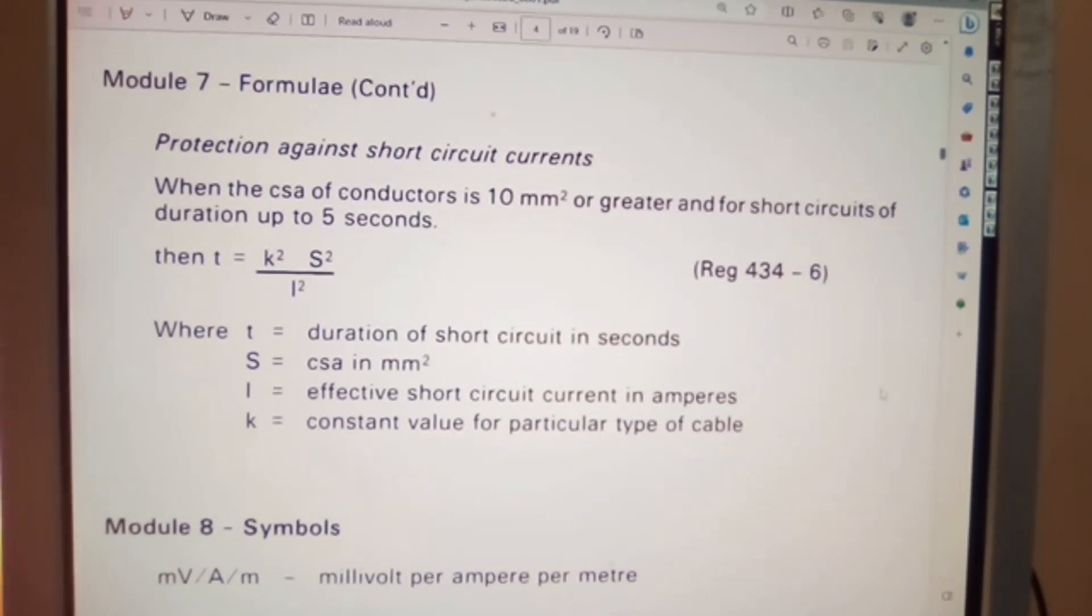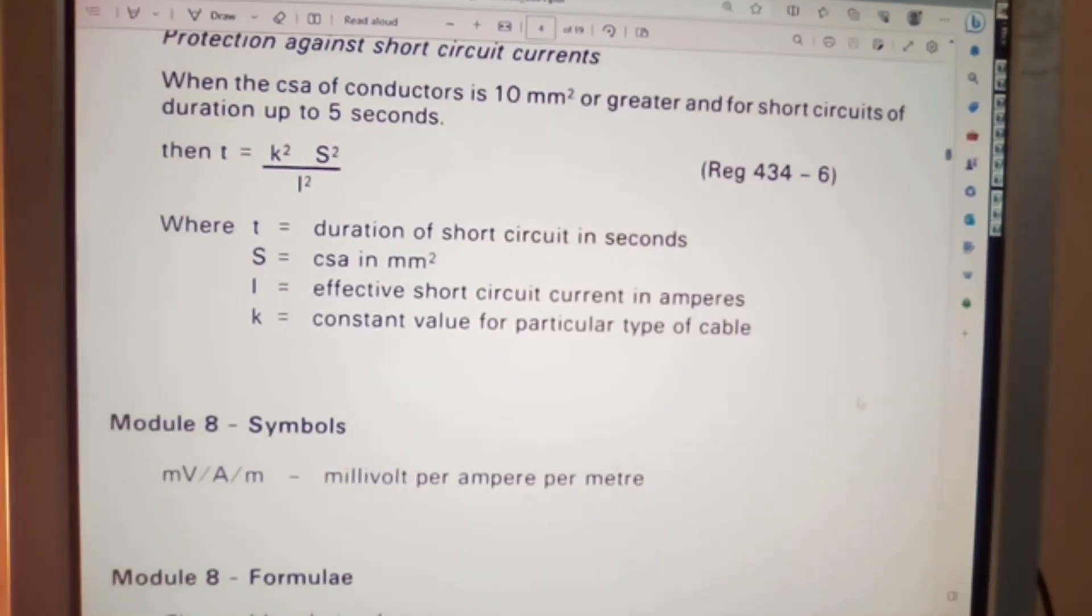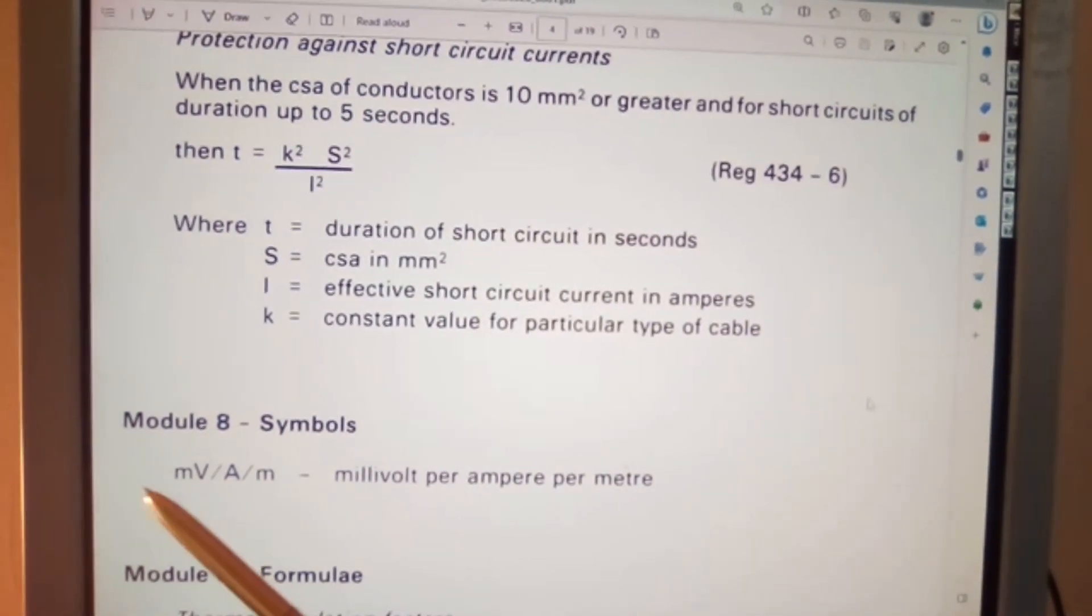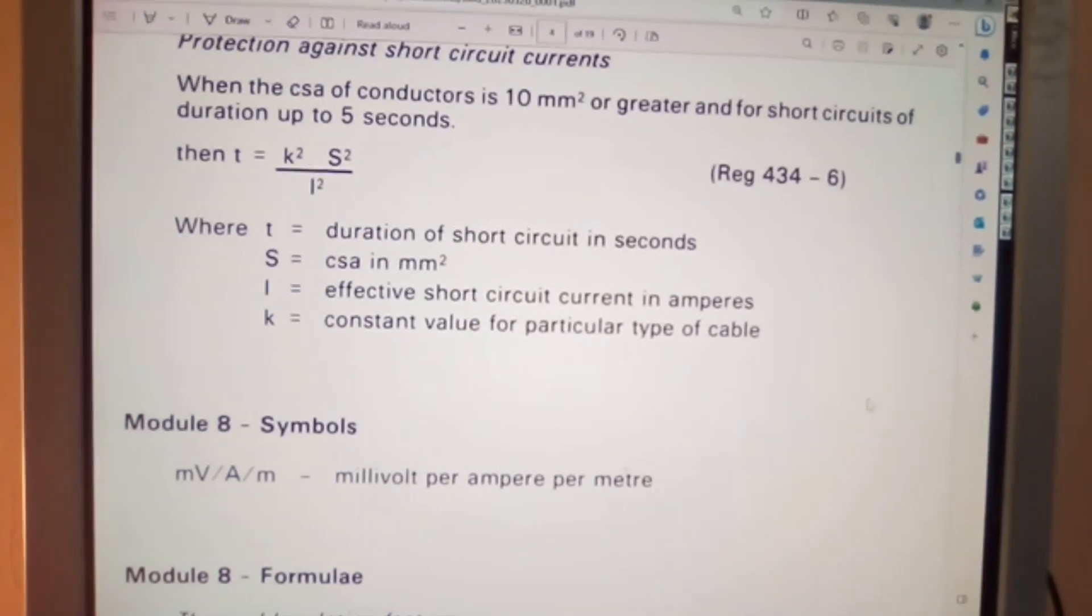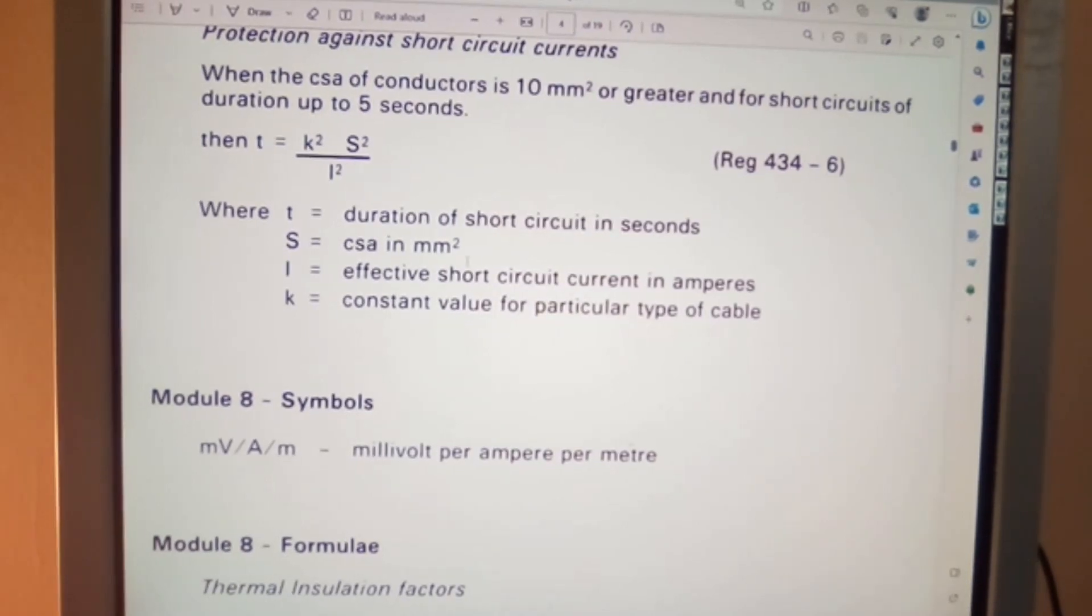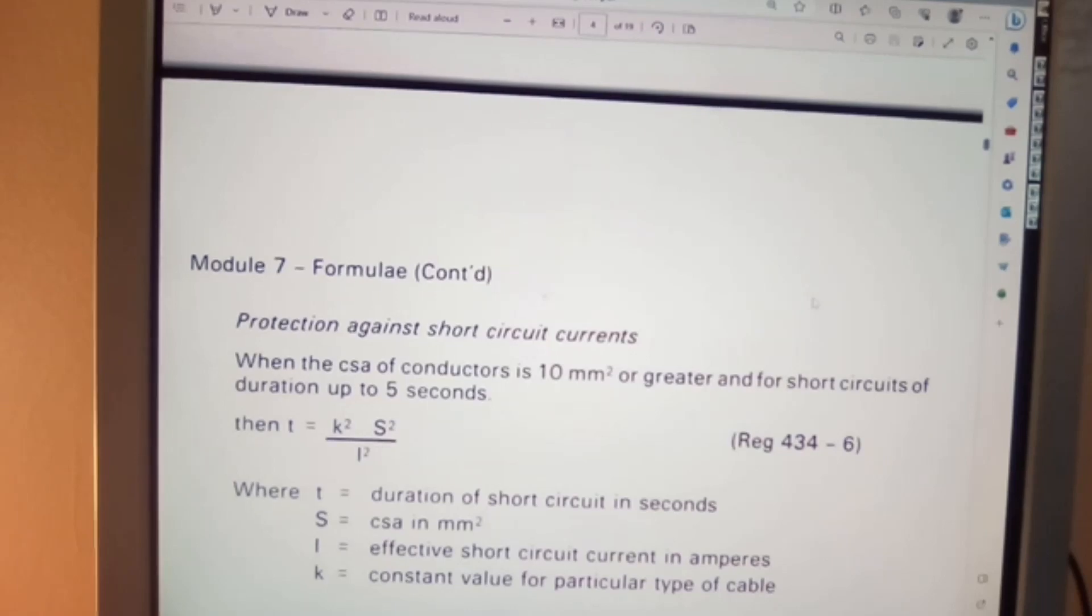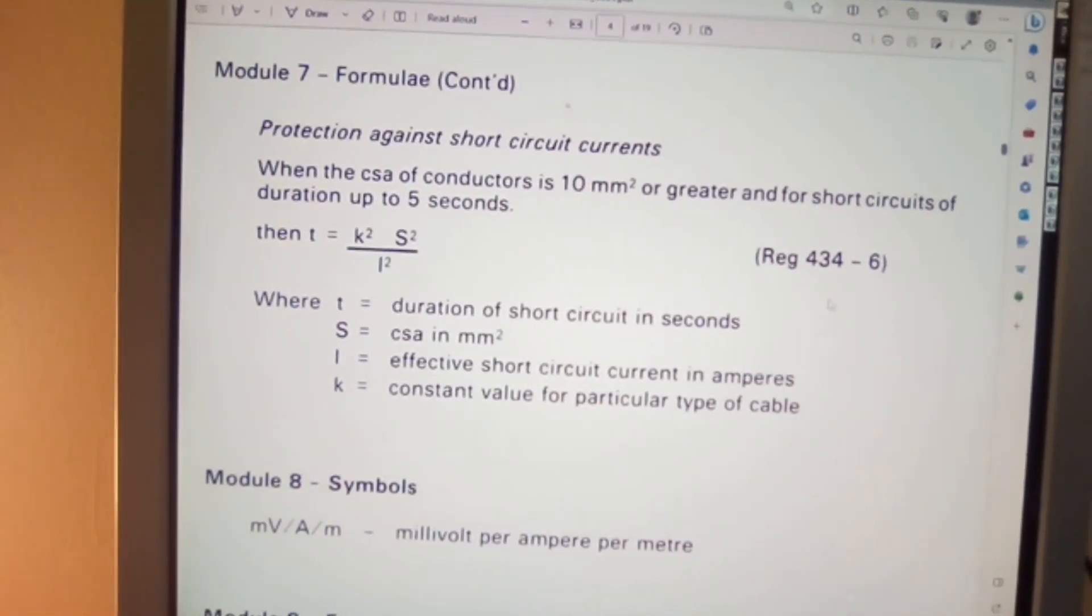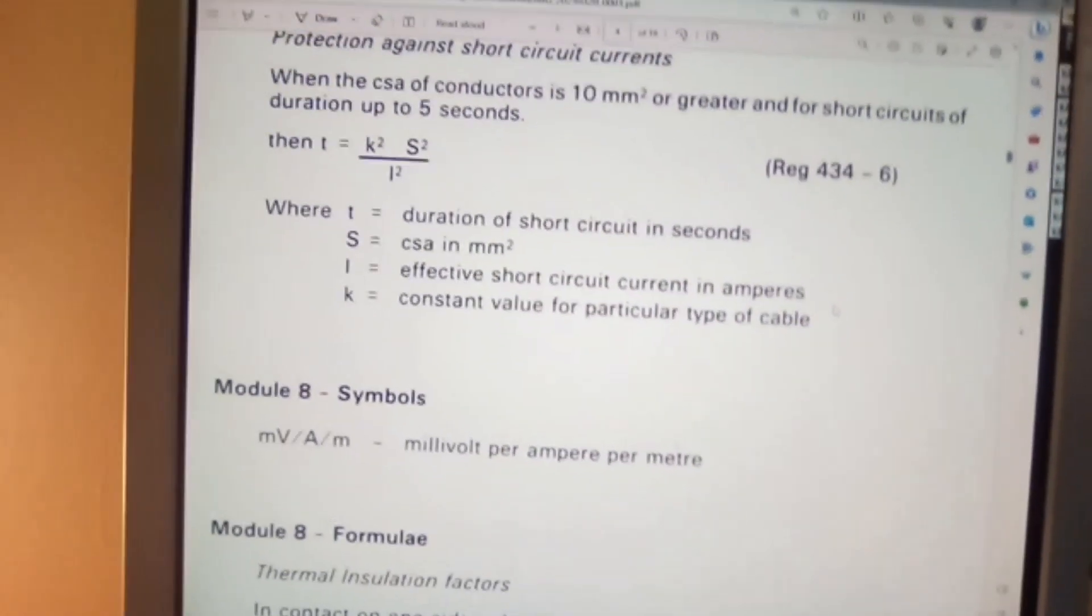Alright, this is where I'm going to stop now because I want to do this in several little sections. Module 8 symbols millivolts amps per meter, millivolts per amp per meter. Yes, that's where I was just there, but we're going to stop there for now. Let me just go back and make sure that we got it all in here for you. We'll pick it up in part two. I won't go back because each one will be different. So we'll pick it up from section eight next time. Thank you for your time, have a good day. Bye bye for now.